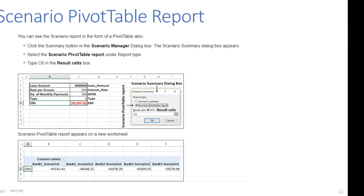You can also view the scenario report as a PivotTable. Click the Summary button in Scenario Manager. The Scenario Summary dialog box appears; select 'Scenario PivotTable' under Report Type, then type C6 as the result cell. The Scenario PivotTable report appears on a new worksheet. That concludes this video lecture on Scenario Manager as part of what-if analysis in Microsoft Excel. Thank you very much for viewing.